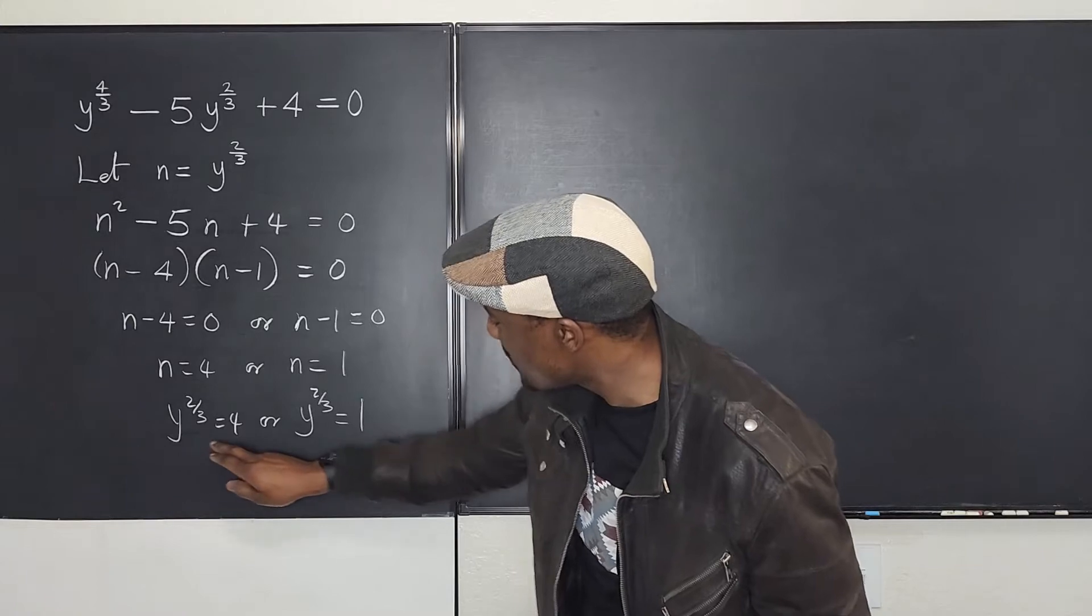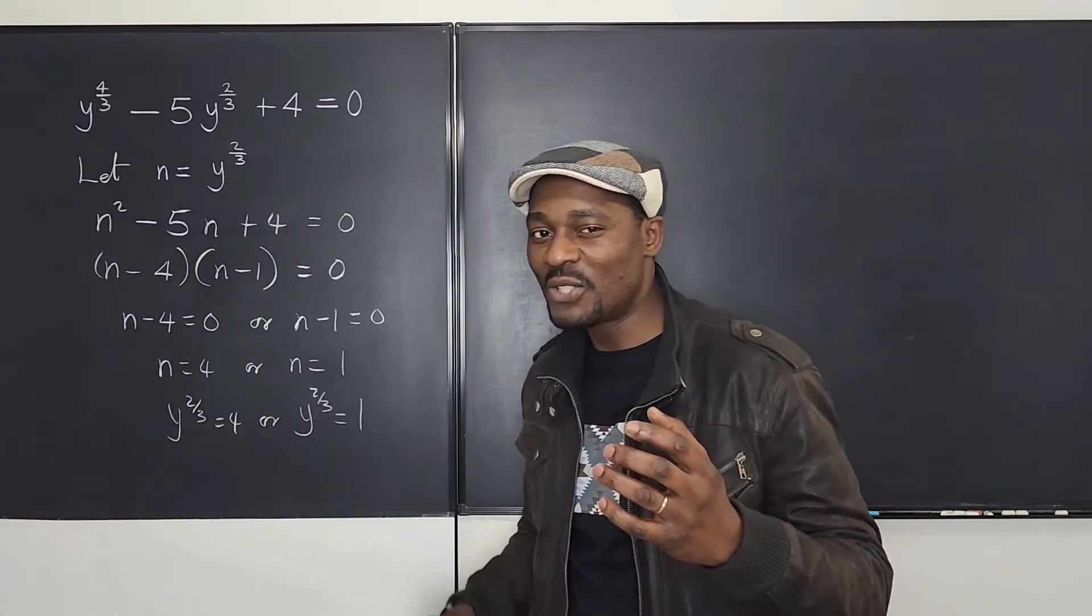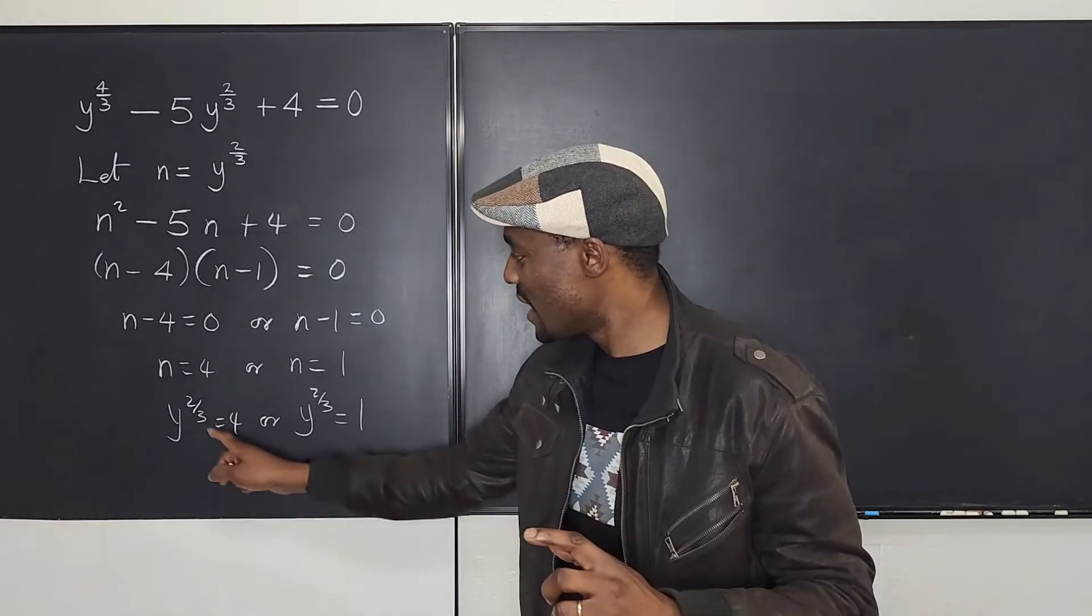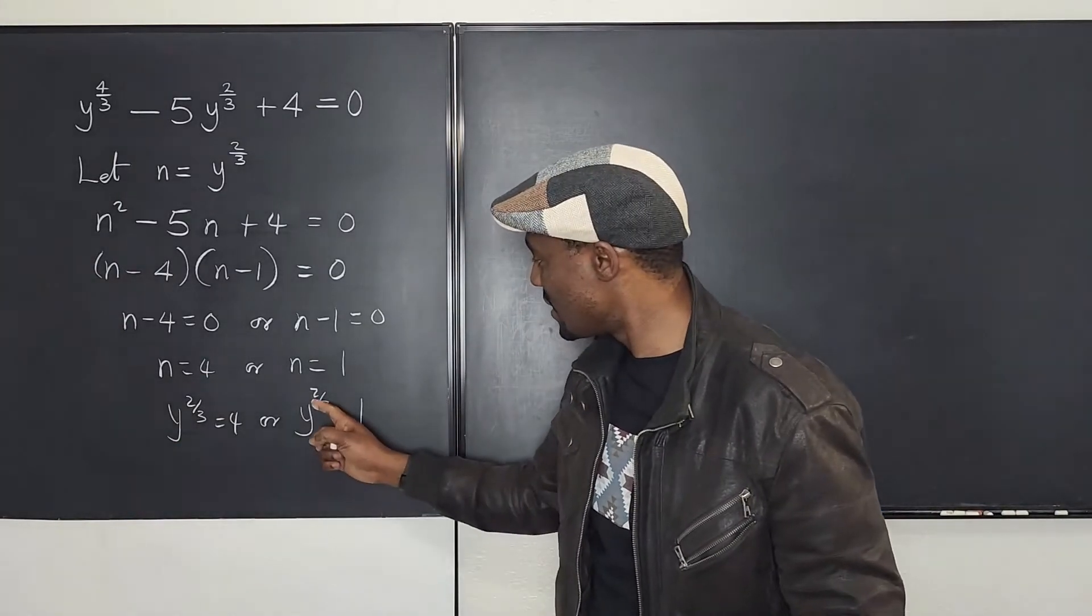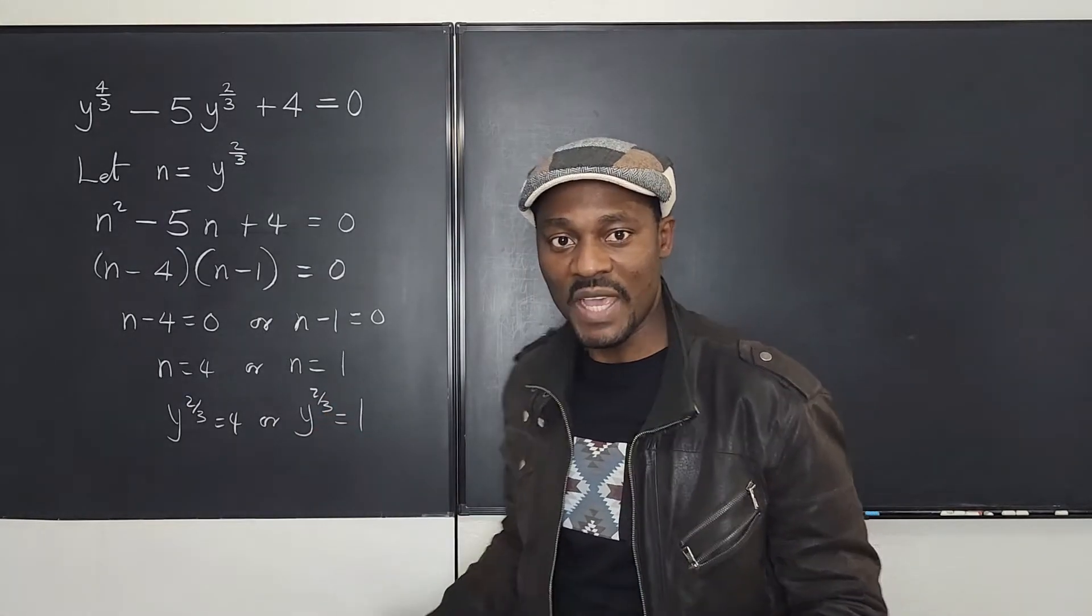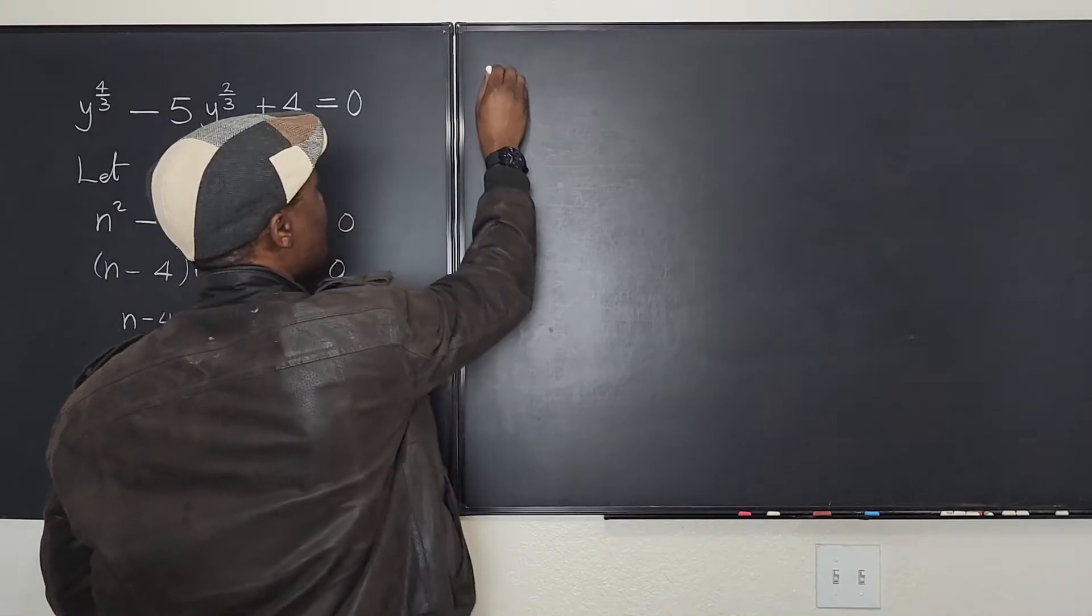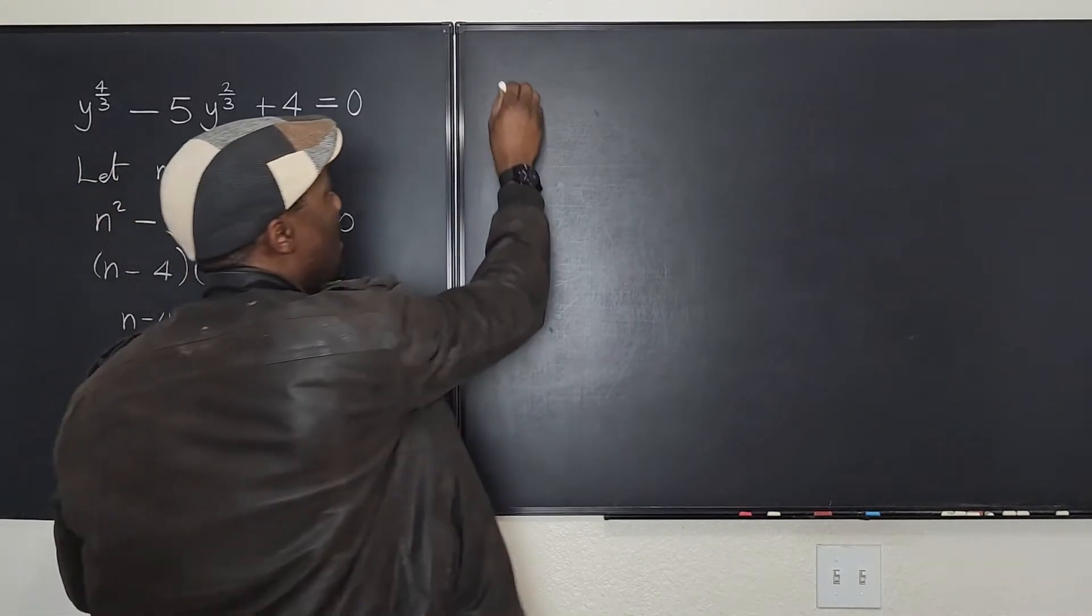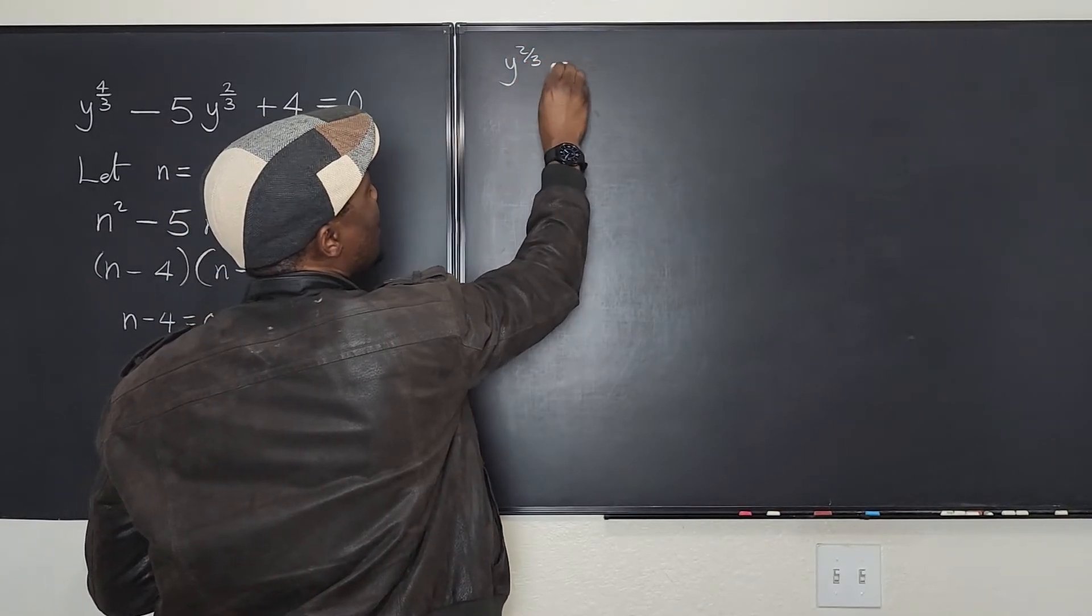Now let's go solve these very innocent looking equations, but they have a trick to it because you have to recognize that this itself is the square of something and this is the square of something. Now let's rewrite it. Let's start with the first one, the smaller number. So we have y to the two-thirds is equal to 1.